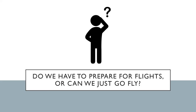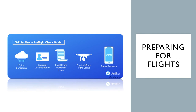Now that we have our FAA Part 107 license and are ready to commercially operate, does that mean we can just go out and fly? No — you always have to prepare for your flights or missions even with a commercial license. I found this image online showing all the steps I complete during my pre-flight checklist. I'll go through each category from left to right so you know what to look for to ensure a safe flight.